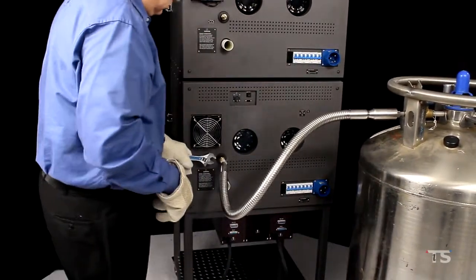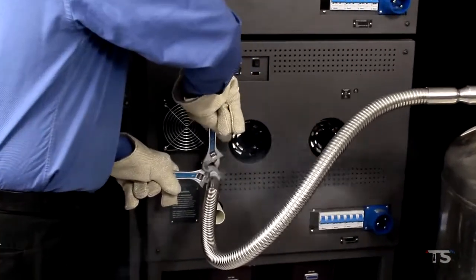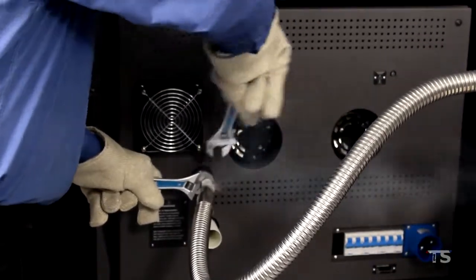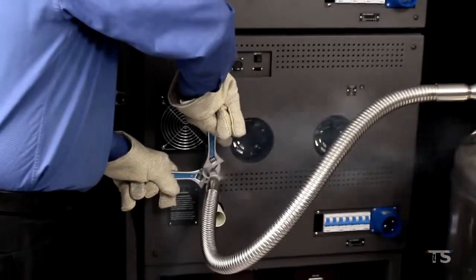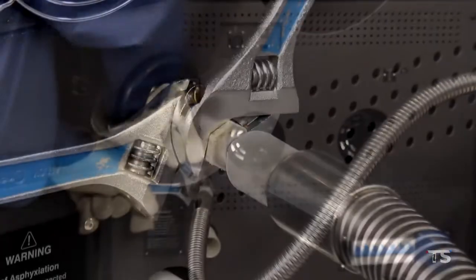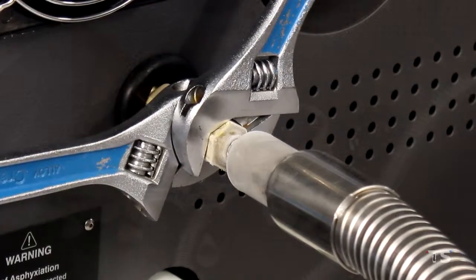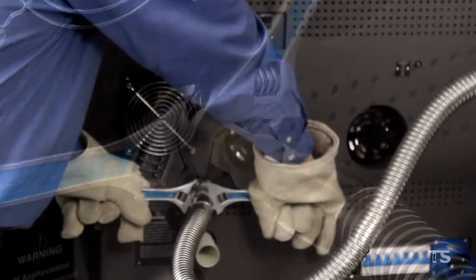Our attention should now be on the cryo inlet connections. We want to see the gaseous nitrogen vapor escaping from the hand-tightened connections. Once you are sure that gaseous nitrogen vapor is present, wait for the cryo inlet fittings to frost up. Once the fittings have frosted up, use your wrenches to fully tighten the connections.